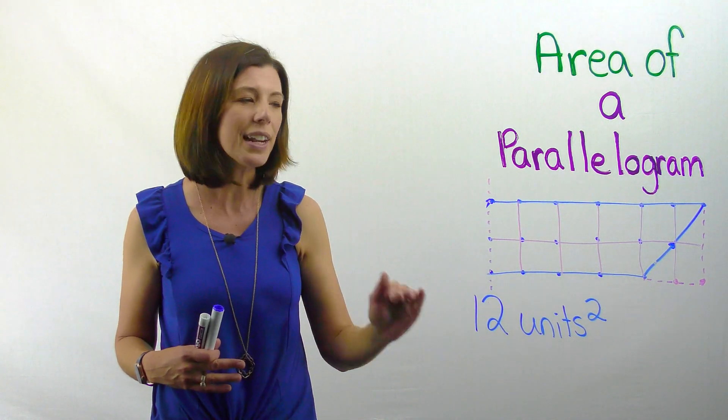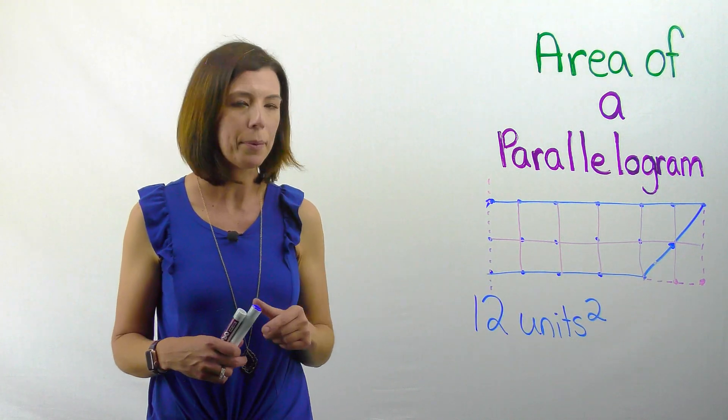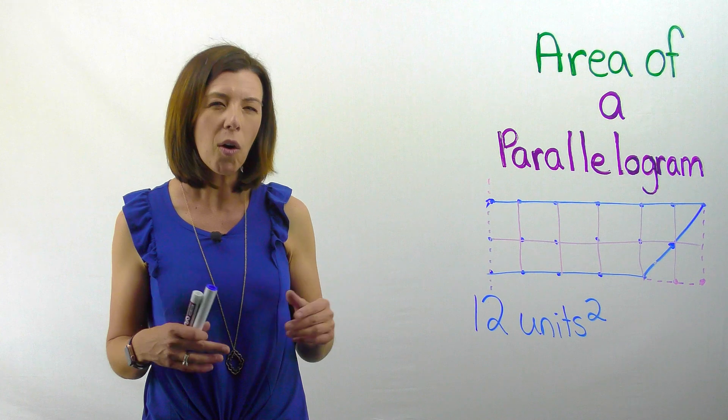So, notice that I have six units on the bottom and two units as I go straight up here, right? What do we call these?